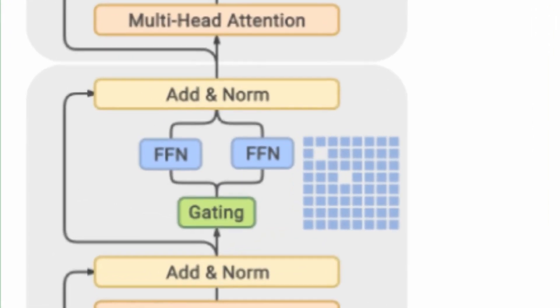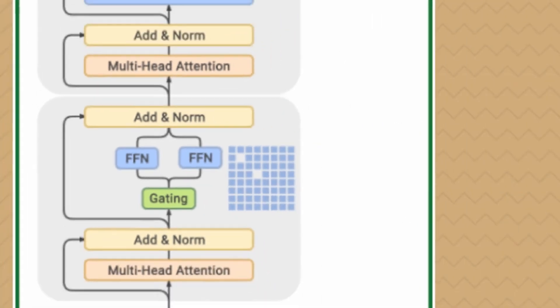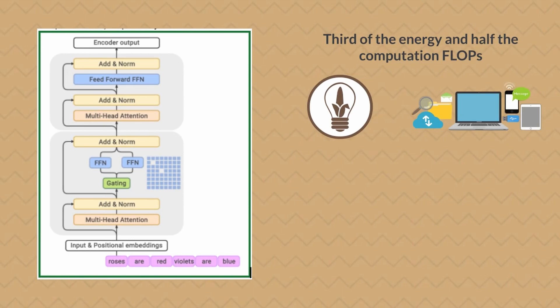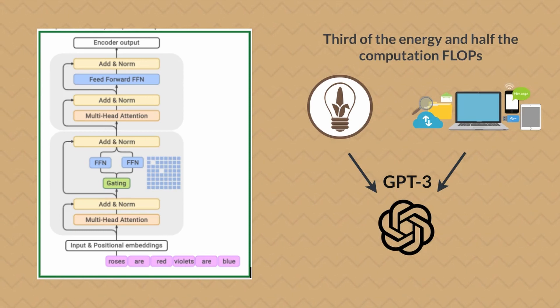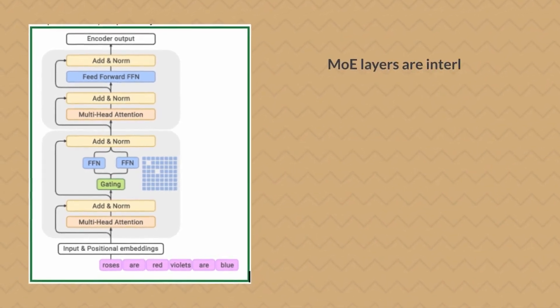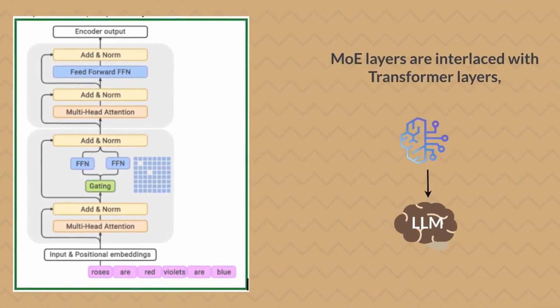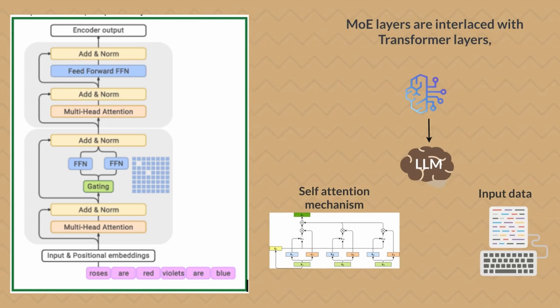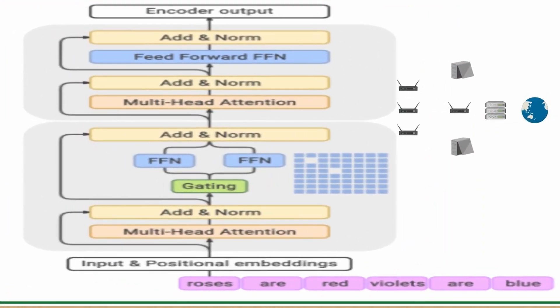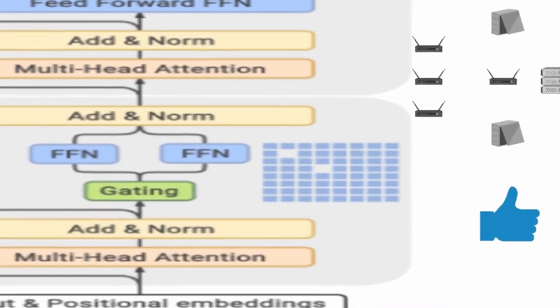At the core of GLAM's architecture are the MOE layers, which introduce a gating mechanism to selectively activate only the most relevant experts for a given input. This allows GLAM to scale up to a colossal 1.2 trillion parameters, about seven times the size of GPT-3, while still conserving computational efficiency. In practice, this architecture consumes merely a third of the energy and half the computation flops, which stands for floating point operations per second required by GPT-3 for similar tasks. The illustration shows that MOE layers are interlaced with transformer layers, which is the bedrock of modern LLMs, known for their self-attention mechanisms that weigh the significance of different parts of the input data.